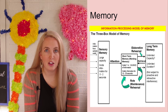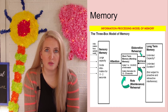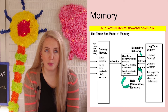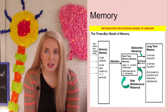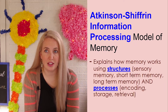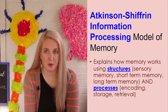The traditional model of memory that we're going to be using when discussing how our memory works is the Atkinson-Shiffrin information processing model of memory, or the three-box model of memory, as we often call it. This includes the structures of how memory works, which is sensory memory, short-term memory, and long-term memory.